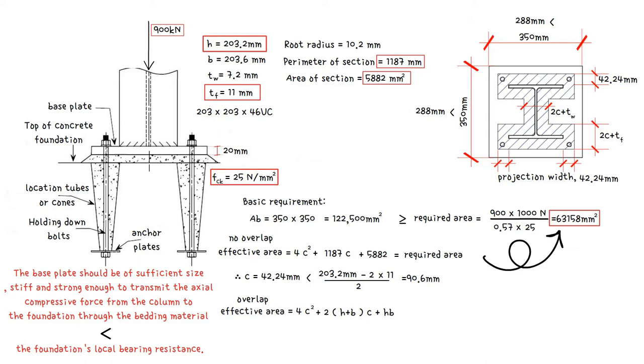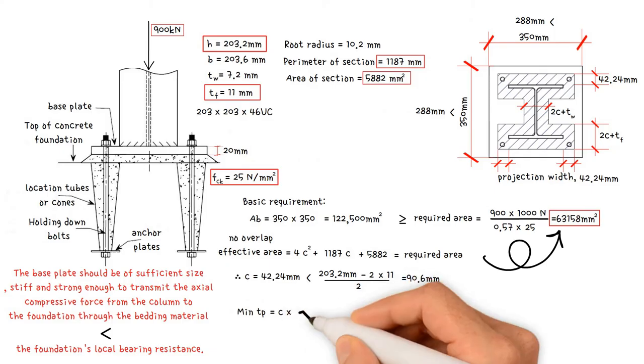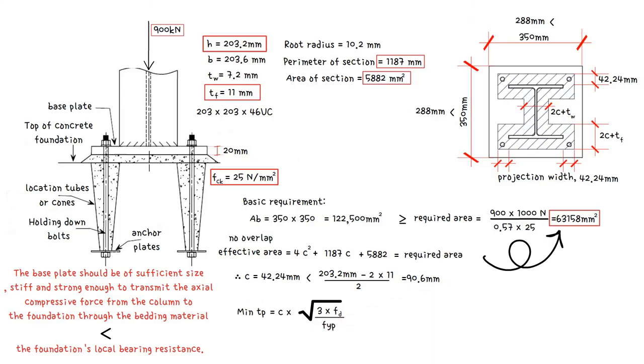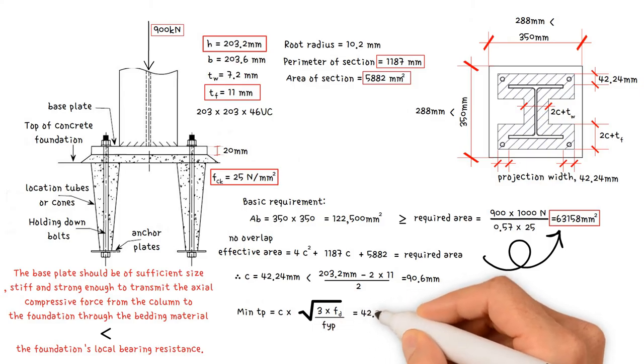Finally, we will work out the minimum plate thickness which equals C times square root of 3 times design compressive strength of concrete divided by yield strength of plate. Minimum plate thickness equals C, 42.24 millimeters, times square root.